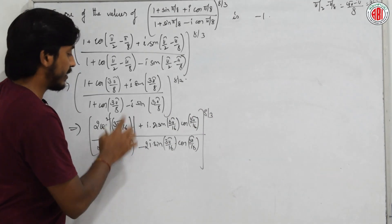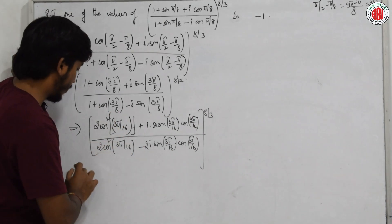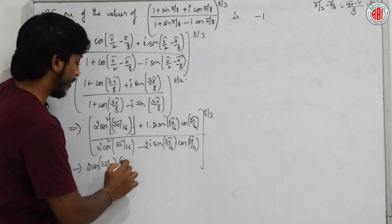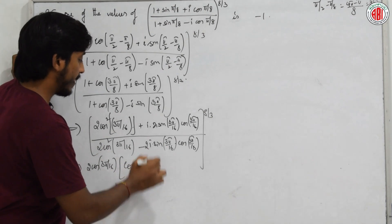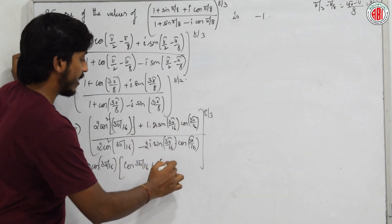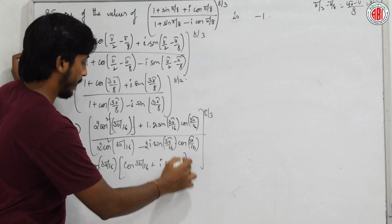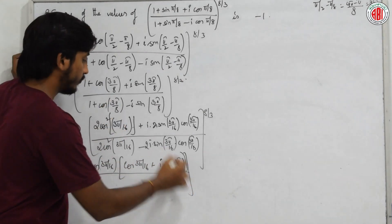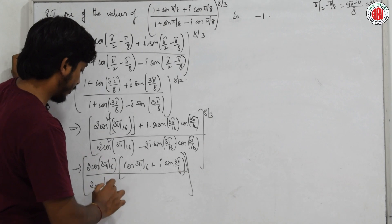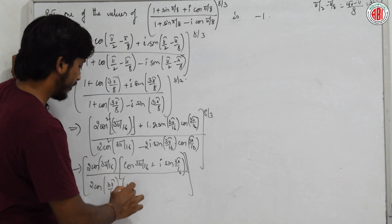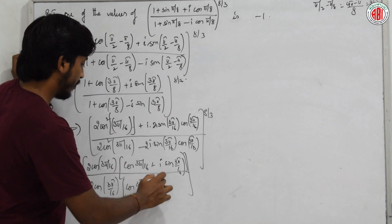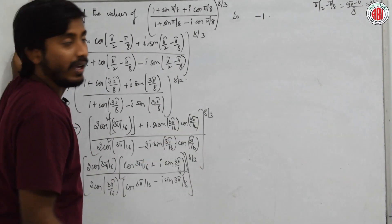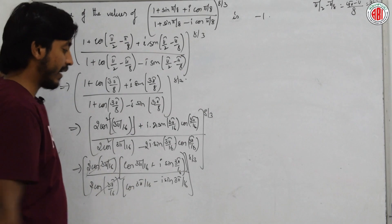We factor out 2cos(3π/16) from numerator and denominator. The numerator becomes 2cos(3π/16) · (cos(3π/16) + i sin(3π/16)) and denominator 2cos(3π/16) · (cos(3π/16) − i sin(3π/16)). The 2cos(3π/16) terms cancel.